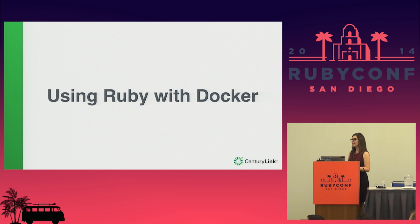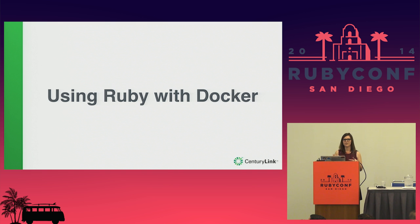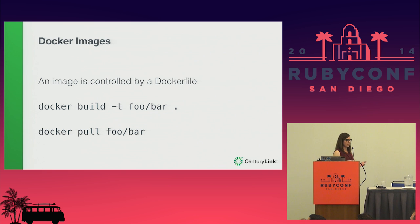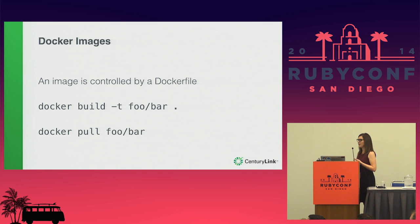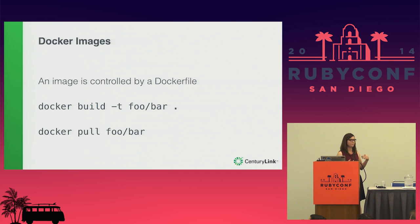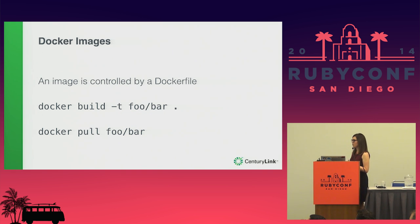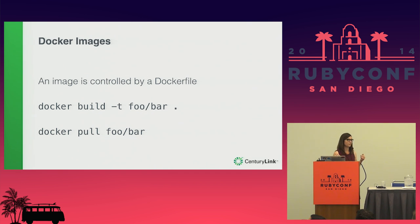On to the good part: using Ruby with Docker. Specifically, how might you use the API, the CLI, and an image to make a container that's running Ruby and can run your Ruby application? Before we really get into spinning containers up, we have to take a step back and acquaint ourselves with what an image is. Think of a Docker image as the class and a container as an instance of that class. You have to have an image in order to start a container.